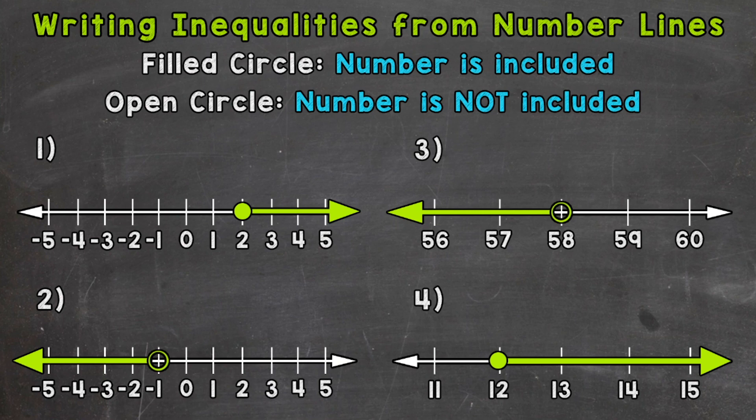Now remember, when it comes to inequalities, a filled circle means that number is included in the solutions. An open circle means that number is not included in the solutions. So let's jump into number one.